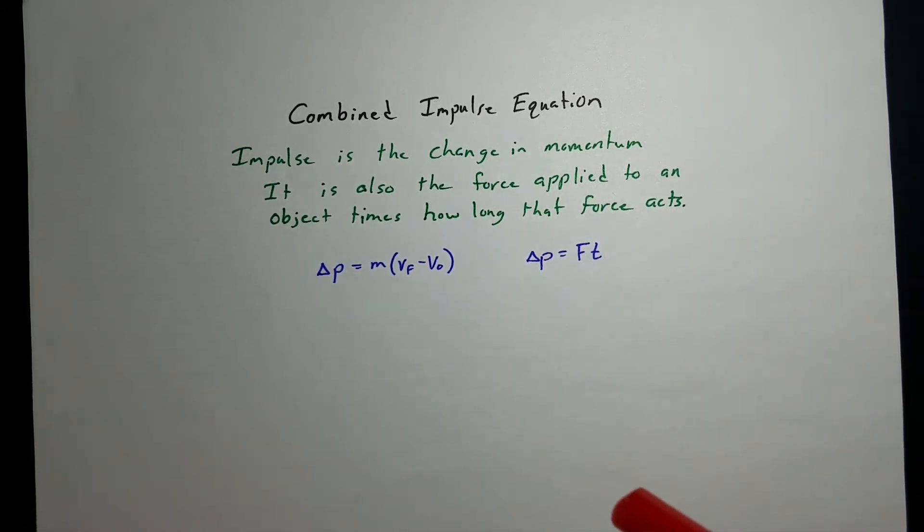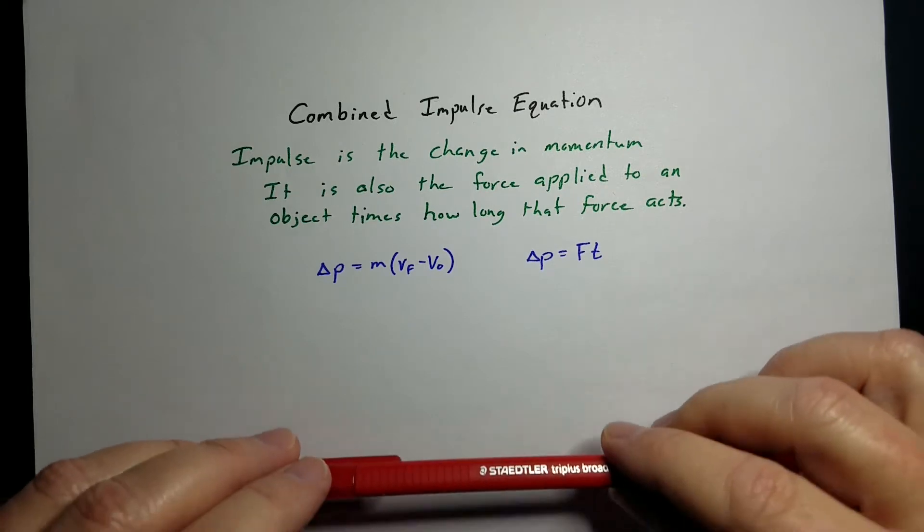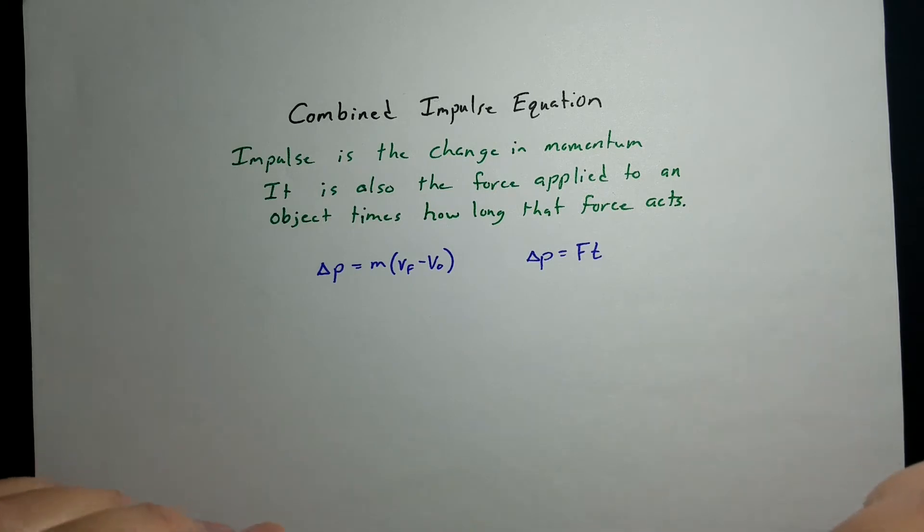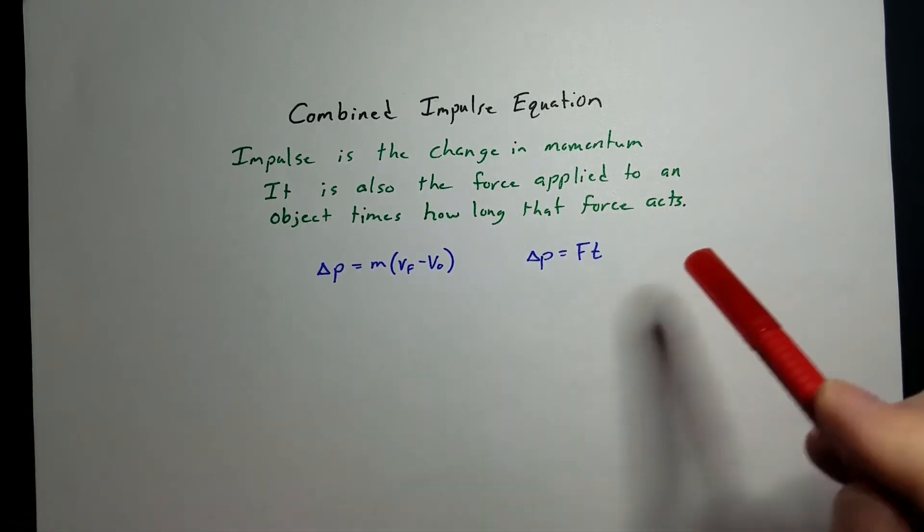Impulse is the change in momentum. As a matter of fact, that's sometimes how we ask the question, is to find the change in momentum. Momentum is also defined as the force applied to an object times how long that force acts. Unlike work, where work is force times the distance that force acts, impulse is force times the amount of time that force acts.